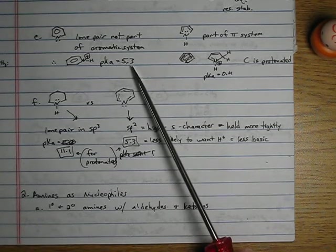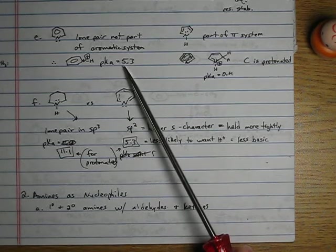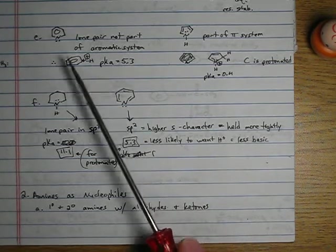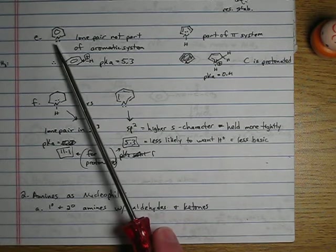So they're more readily protonated. Now it still has a pKa of the protonated pyridine of 5.3. It's still not the best. It's still pretty acidic, more acidic than ammonia.